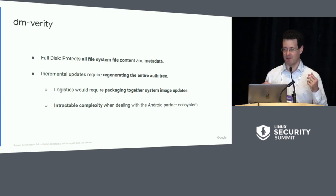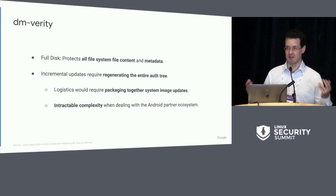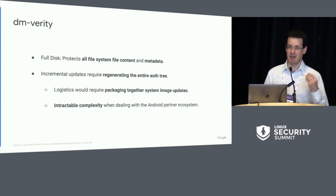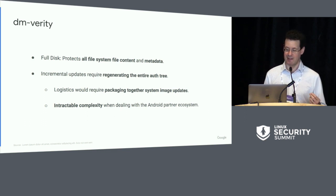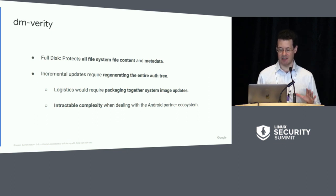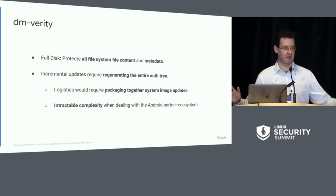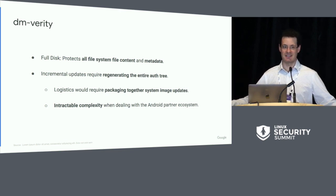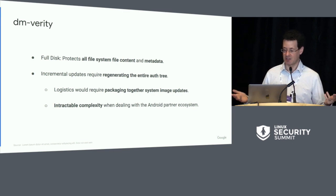On a mobile platform like Android, you have an ecosystem with partners, different regions, and different devices. Every incremental update to the system partition requires regenerating the entire auth tree and packing that together with system image updates. When you deal with this Cartesian explosion of devices, updates, and versions, you end up with something very unwieldy. It becomes intractable to keep all of that authenticated in the way we'd like.